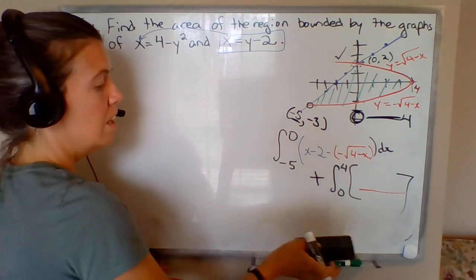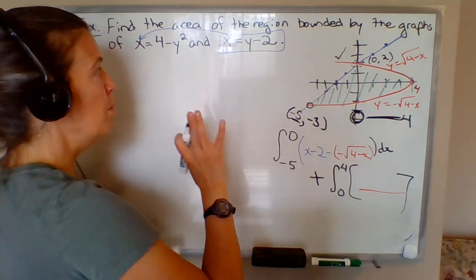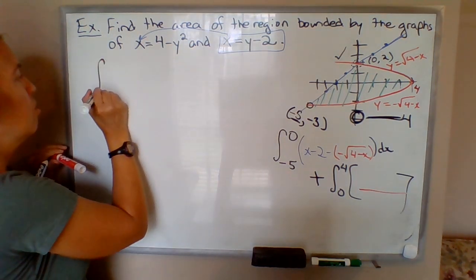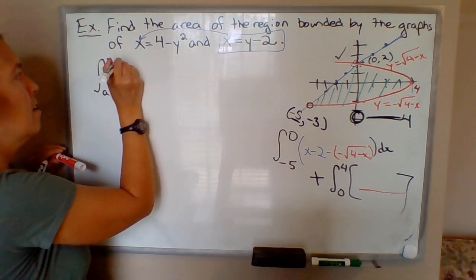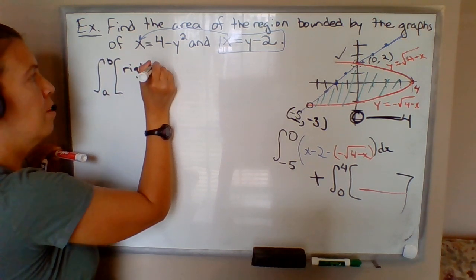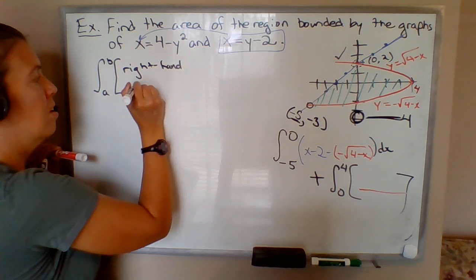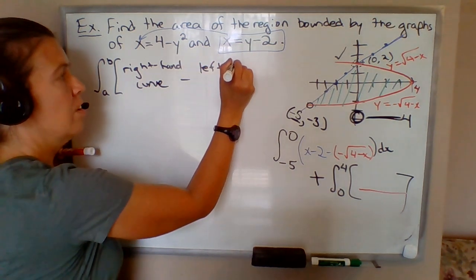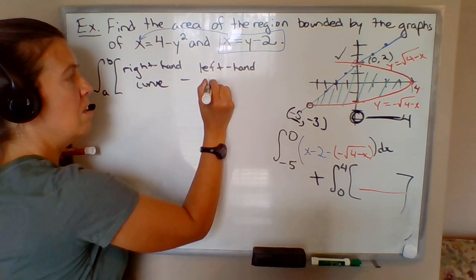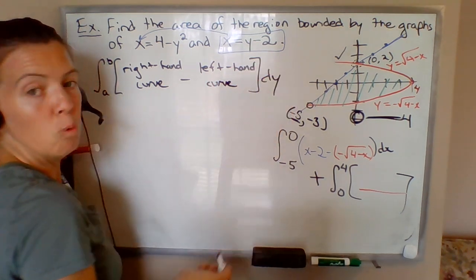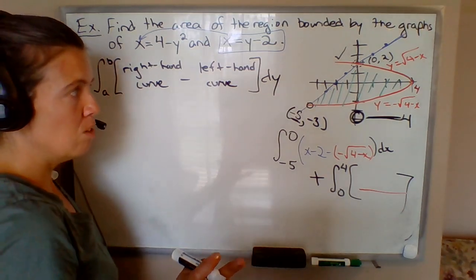There's a better way to do it. Instead of upper minus lower, another way to find area is to do the integral from a to b of right-hand curve minus left-hand curve. So instead of top minus bottom, we're going to do right minus left integrated with respect to y.